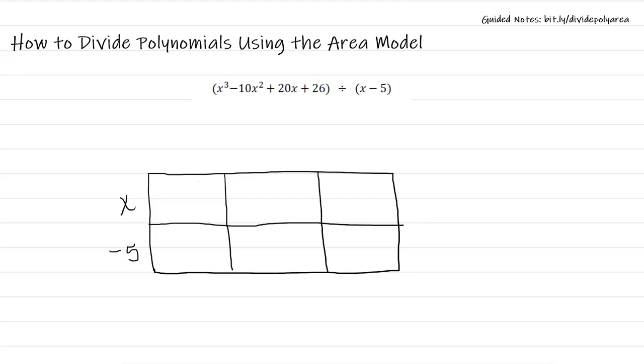Alright, so we're going to start with this x cubed just as we did before. So x times x squared gives me this x cubed. Negative 5 times x squared represents negative 5x squared.